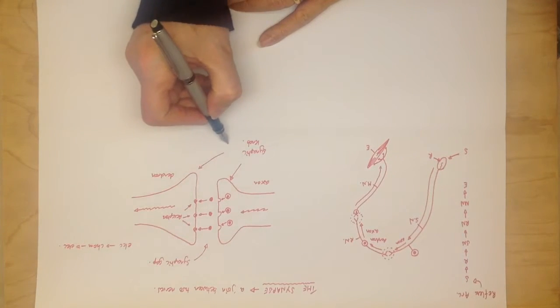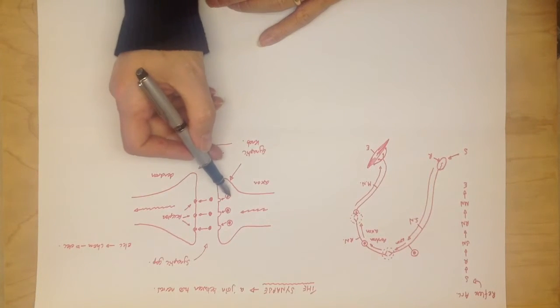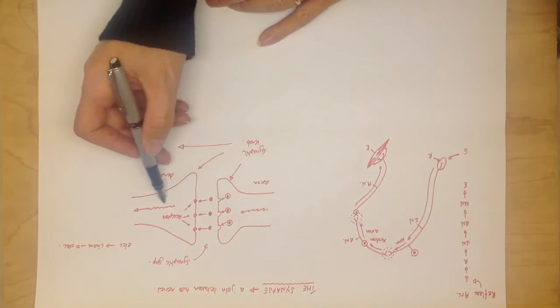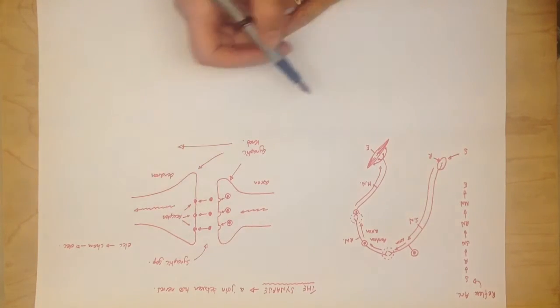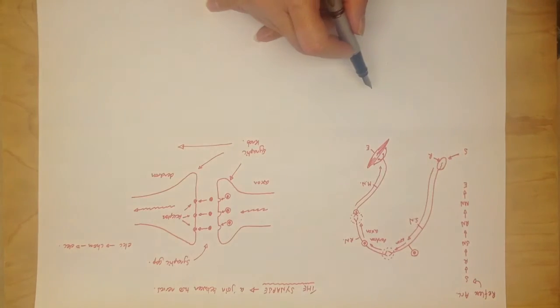And it can only flow, the message can only go in one direction. Because the neurotransmitters are made here, and they have to be released here and crossed the gap. It can't go the other way because the neurotransmitters are not made on this side. And that's basically how a synapse works.